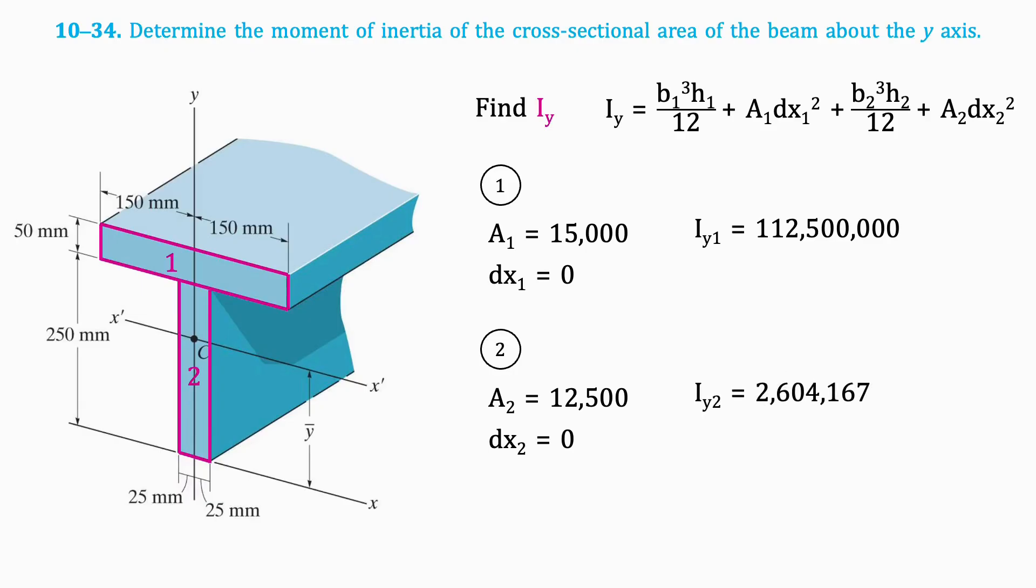To find the total moment of inertia of the shape, we will add the moment of inertia of each section together. This results in around 115 million, which can be simplified to the following answer. And there you have it, quick statics answers.